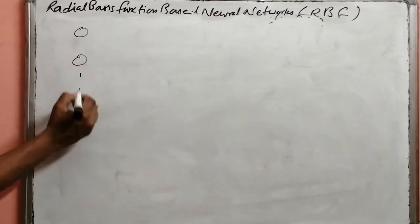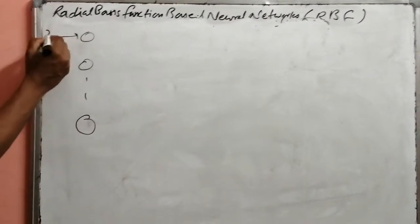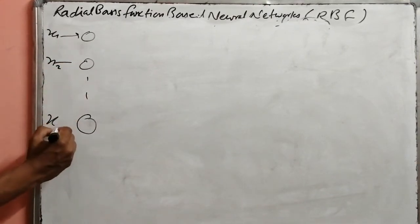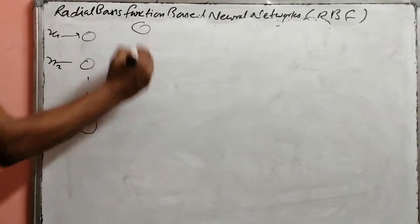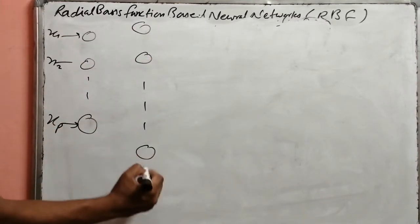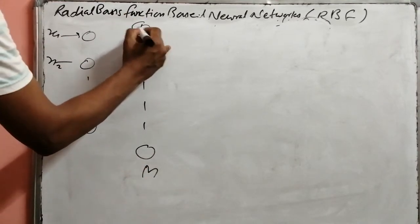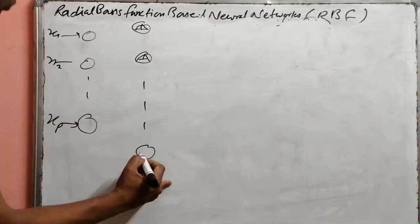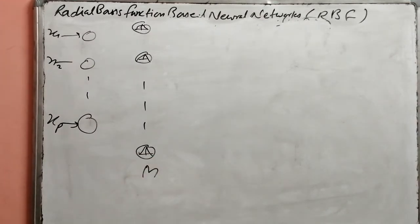The architecture has x1, x2, up to xp number of neurons in the input layer, and m number of neurons in the hidden or RBF layer. These neurons follow a Gaussian function as a radial basis function.